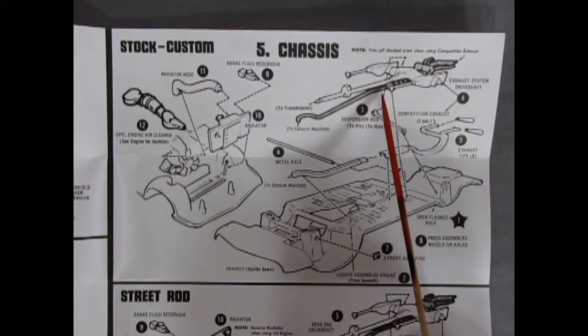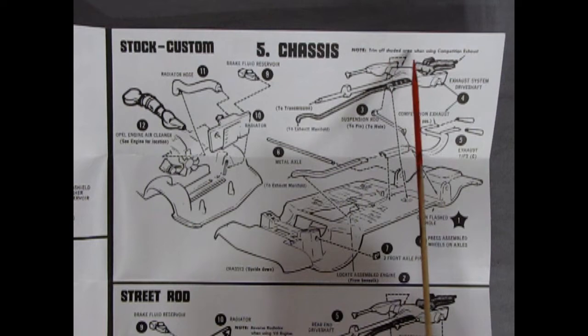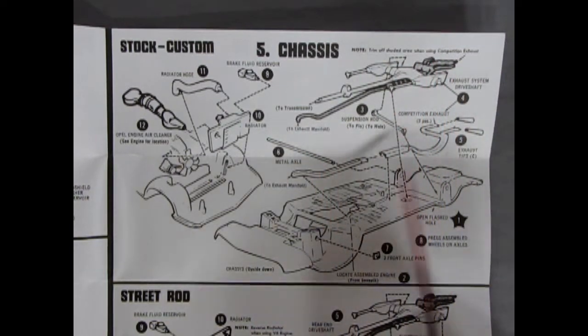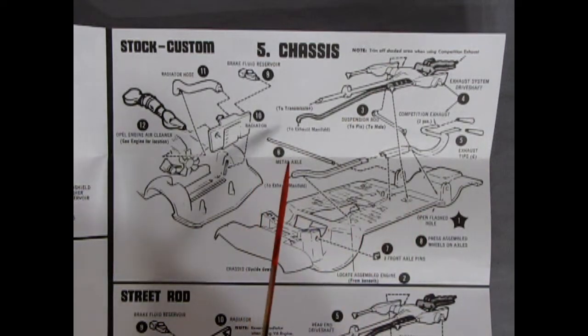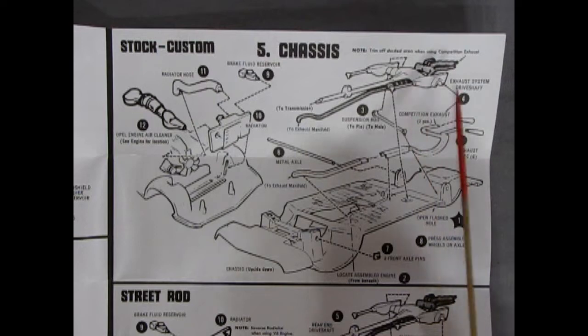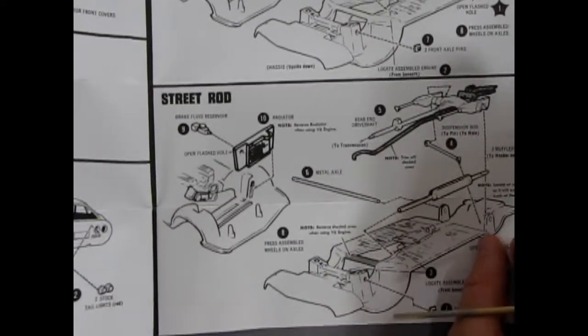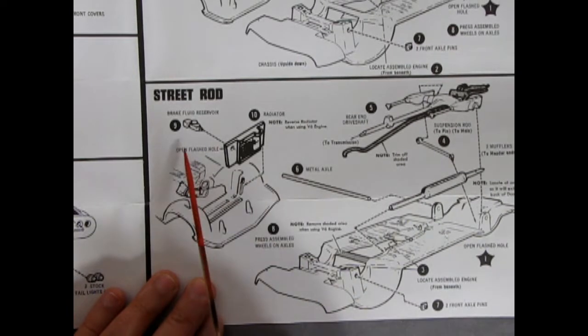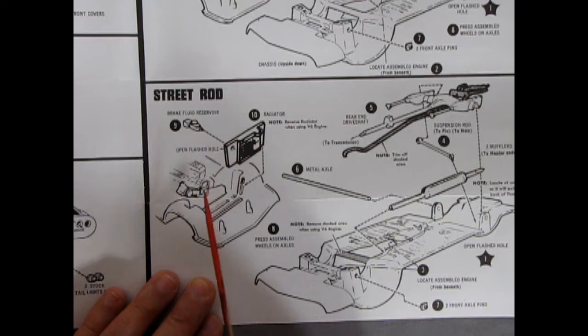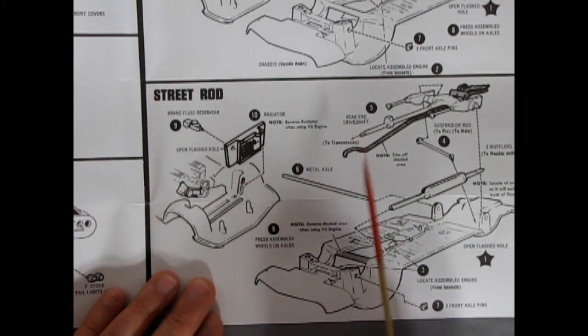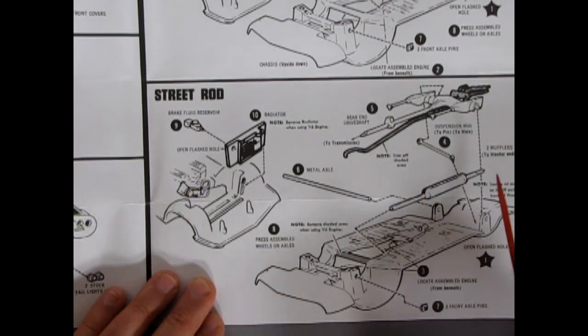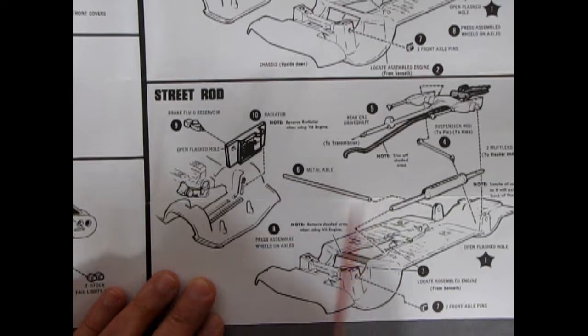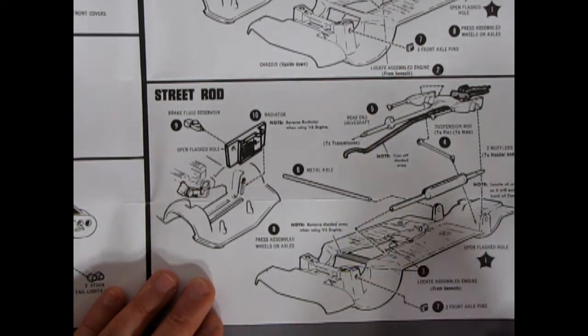Then you've got your rear axle and suspension. Trim off shaded area when using competition exhaust, so that's a stock exhaust. Then they have this competition exhaust, it splits down and gives you the double pipes from your V6 with of course little trumpets at the back. The metal axle will go through the rear suspension and then all this drops on top so you don't see that. You got front axle pins going in there. Then down here for your street rod you have the brake fluid reservoir going in through that same hole that was on the radiator. You reverse the radiator, turn it around in there.